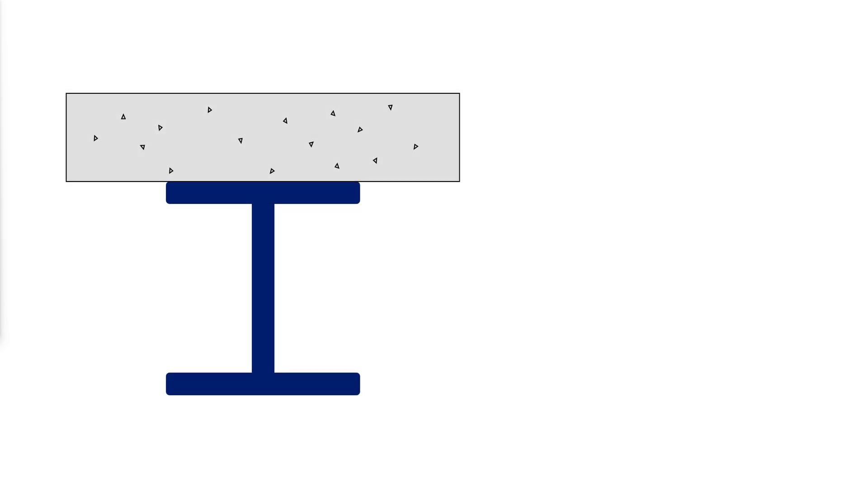If the steel section has compact webs when a composite beam has reached the plastic limit state, the stresses will be distributed in one of three ways.